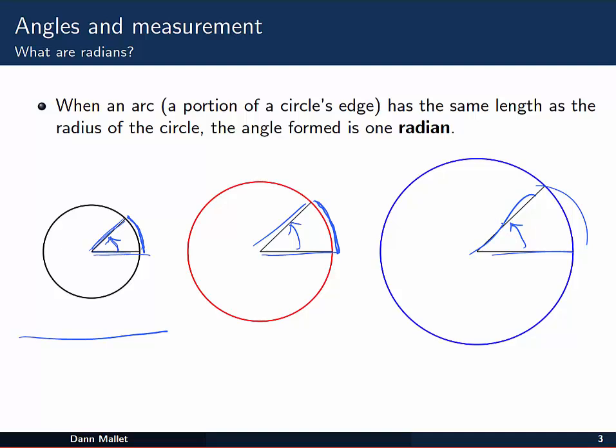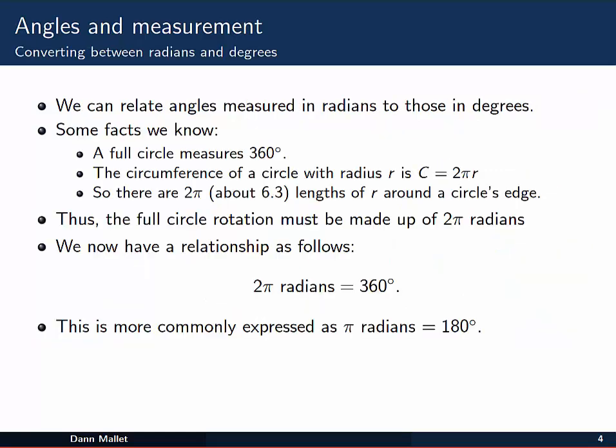Now it turns out that if you put a few of these together all the way around, you don't end up with a perfect whole number of radians around a circle, whereas with degrees we had 360 degrees in a full circle rotation. The number of radians isn't a nice neat number like that. We can actually figure out how many radians there are around that circle by looking at a relationship between radians and degrees.